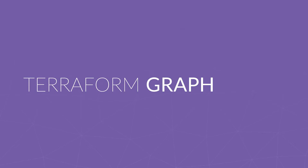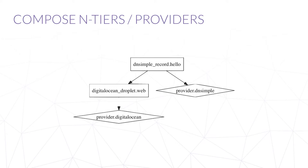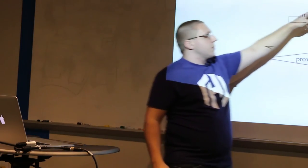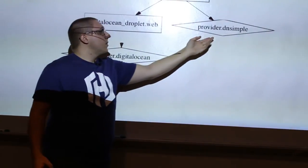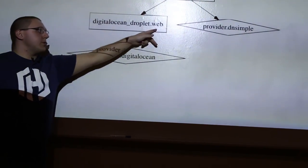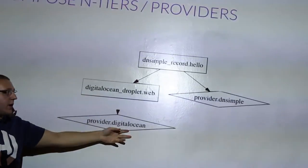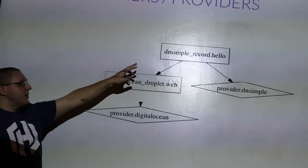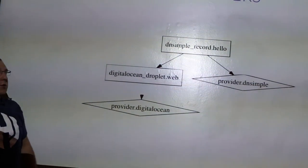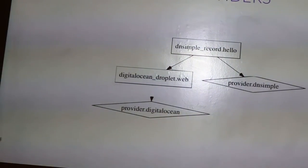So let's talk about the Terraform graph. Terraform graph is both an internal construct and a command. If you run terraform graph on the example we just had, you'll get a nice output showing the inverse of the dependencies. DNS Simple depends on the DNS Simple provider; it also depends on the DigitalOcean web droplet, which depends on the DigitalOcean provider. If you have a more complex infrastructure, this graph can be huge. You can also see which pieces are going to be able to run in parallel versus which pieces need to happen one after the other.